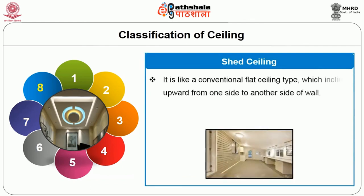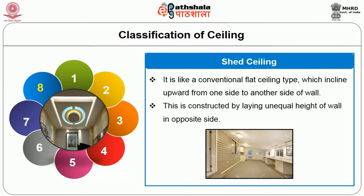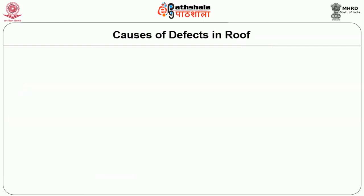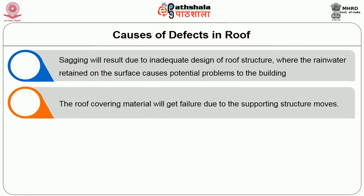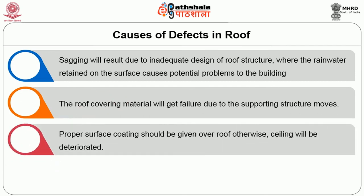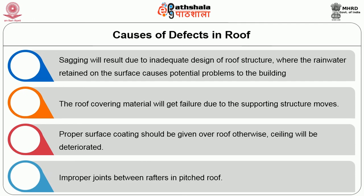Shed ceiling is like a conventional flat ceiling type that inclines upward from one side to another side of the wall. It is constructed by laying unequal height walls on opposite sides. Causes of defects in roofs and ceilings: sagging results from inadequate design of roof structure where rain water retained on the surface causes potential problems. Roof covering material fails due to movement of the supporting structure. Proper surface coating should be given over the roof otherwise the ceiling will deteriorate. Improper joints between rafters in pitched roof also cause defects.